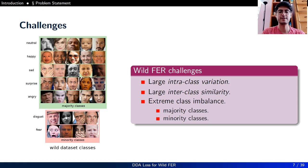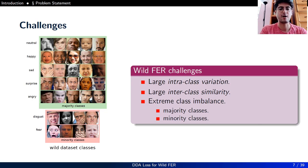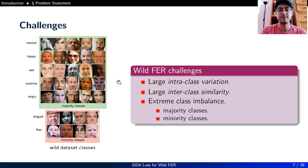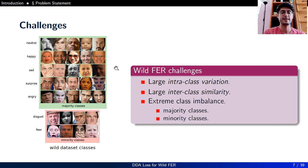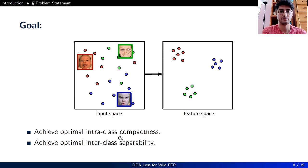However, there are some challenges when working with wild datasets. There is large intra-class variation, meaning images from the same class are very varied. There is also large inter-class similarity, meaning images from different classes might be very similar. There is also extreme class imbalance, meaning the dataset is divided into majority classes and minority classes. Our goal is to map from the input space to a well-clustered feature space and achieve optimal intra-class compactness and inter-class separation.